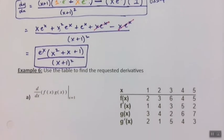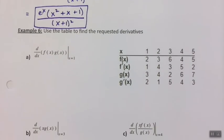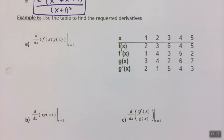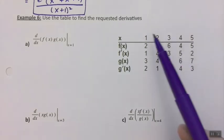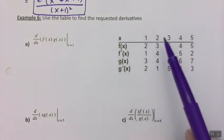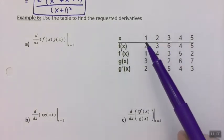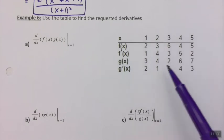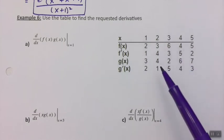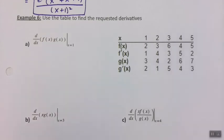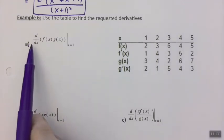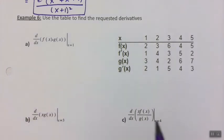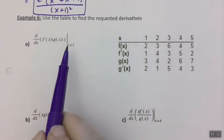Since we like combining these problems together so much, let's combine them in a completely different way. I'm giving you a table of values — here are the x values, and then here are the f, g, f prime, and g prime values for those different values of x. It's asking us to find the derivative of f times g at x equals 1.